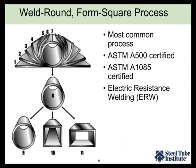In the weld round form square process, the flat sheet is first rolled up into a round shape and then the seam is welded using electric resistance welding while it is still round. During that weld process, the two steel ends are pushed together and current is used to heat and weld the two pieces of material together. It is a very strong weld and produces essentially a one-piece tube with a strong seam.